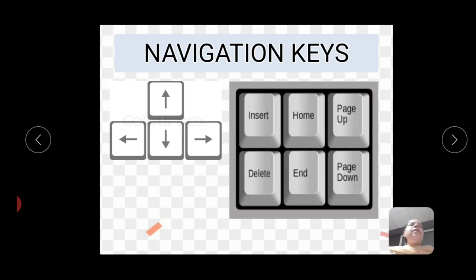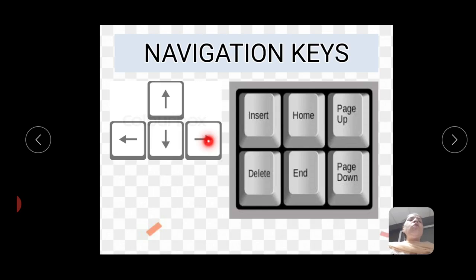Next is navigation keys. Navigation keys decide the movement of our cursor — where we want to move it. This is the up arrow key, down arrow key, left arrow key, and right arrow key. If you press the right arrow key, the cursor moves to the right side. If you press left, it moves left. If you press up arrow key, the cursor will move upwards.